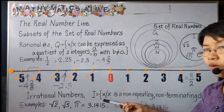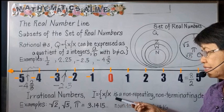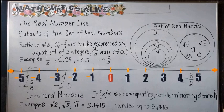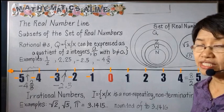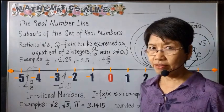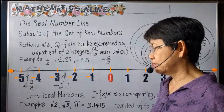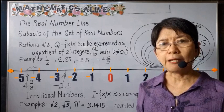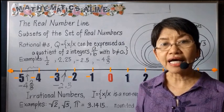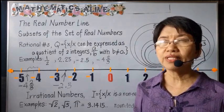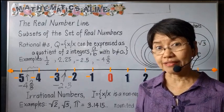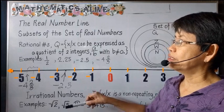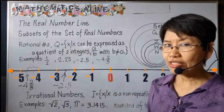The set of irrational numbers is the set of all x such that x is a non-repeating, non-terminating decimal. Examples of such numbers are radical numbers like the square root of 2, square root of 5, square root of 7, and square root of 3, which are not exact values. However, if you take the square root of 9, which equals the exact number 3, then that belongs to the set of rational numbers.